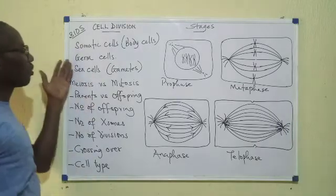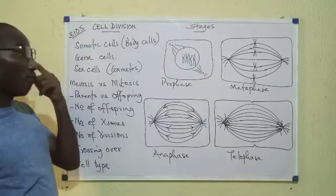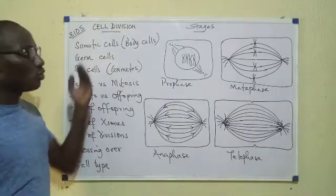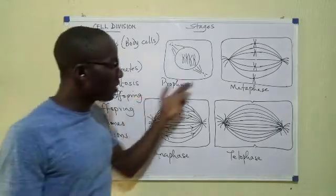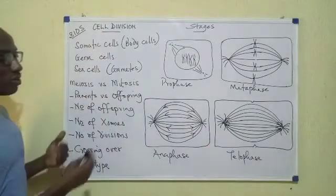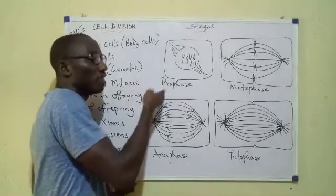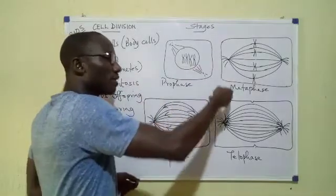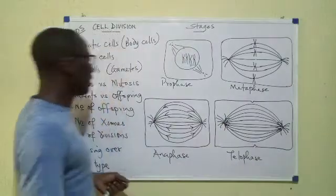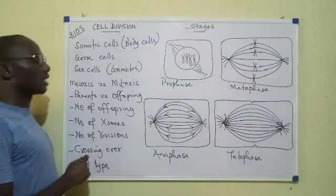Now each of these processes, meiosis and mitosis, have four main stages. Those four main stages are called prophase, metaphase, anaphase, and telophase. Sometimes we divide those four stages into two each as in early prophase, late prophase, early metaphase and so on, but that's not necessary for now because we're trying to keep this simple.